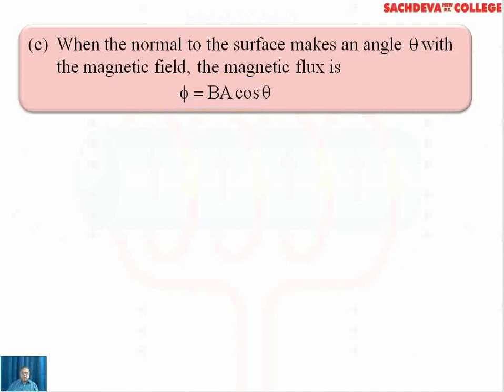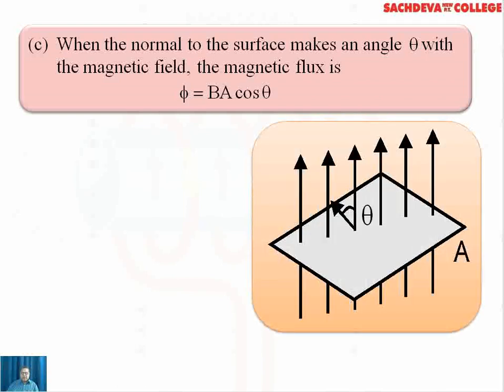For cos theta there will be no dimensions. For B, we put the dimension as Tesla or Weber per meter square, and A will be taken in meter square. After all cancellations, phi will be estimated in Weber. The CGS unit for phi is Maxwell, and 1 Weber equals 10 to the power 8 Maxwell. In this figure, we find that theta is the angle made by that surface area.